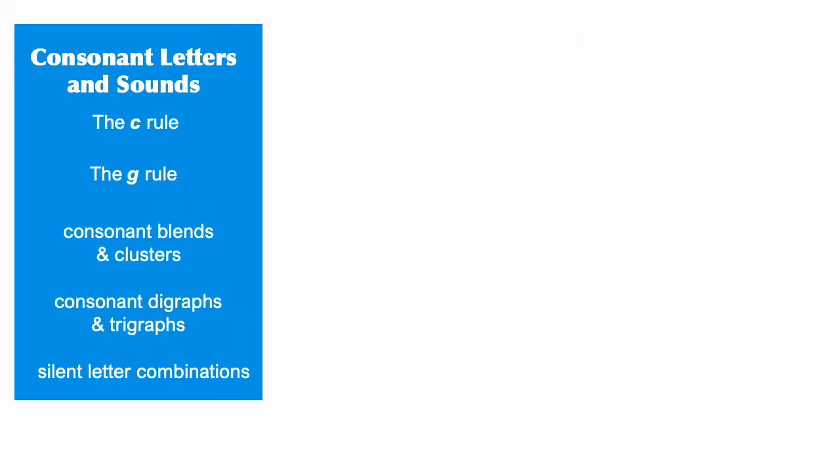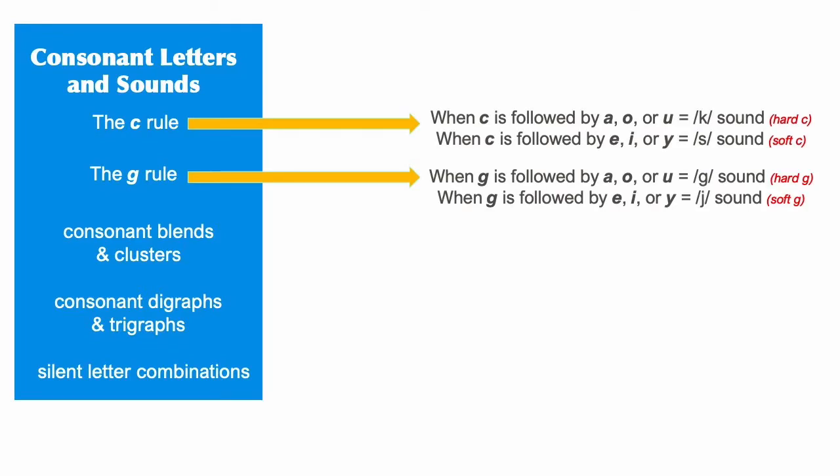Most students learn the consonant phonemes first. The C rule and the G rule are essentially the same rule. Depending on what vowel follows it, the sound that the letter C or the letter G makes will be different. When C or G is followed by A, O, or U, it makes a hard C sound like K or a hard G sound like G.